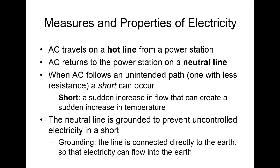To prevent uncontrolled electricity and a short, a neutral line is grounded — meaning it is connected directly to the earth, so that in the event of a short the electricity flows into the earth and not back to the power station. This serves as an escape for out-of-control electricity, because the earth is always capable of accepting a flow of current. The neutral line is grounded multiple times along its travel path — you can even see these on electrical poles outside your house.